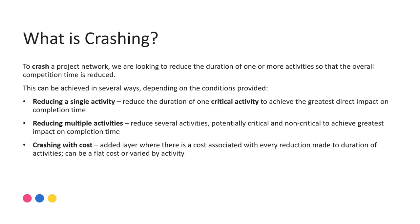In the next video I'll be looking at reducing multiple activities — that's where we can reduce usually a specific number of activities by a certain amount, looking at combinations of critical and non-critical activities to achieve the greatest saving or impact on that completion time. And then the final layer is when we have to work within a budget, so usually that is a cost per reduction, looking at the most cost effective way to achieve the best outcome possible.